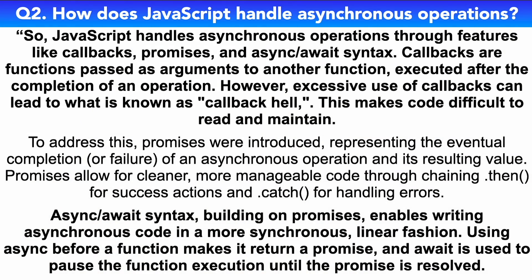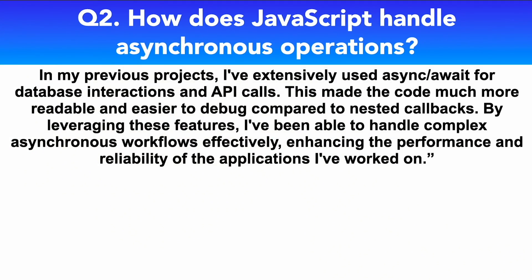Async/await syntax, building on promises, enables writing asynchronous code in a more synchronous, linear fashion. Using async before a function makes it return a promise, and await is used to pause the function execution until the promise is resolved. In my previous projects, I've extensively used async/await for database interactions and API calls, making the code much more readable and easier to debug compared to nested callbacks. By leveraging these features, I've been able to handle complex asynchronous workflows effectively, enhancing the performance and reliability of the applications I've worked on.